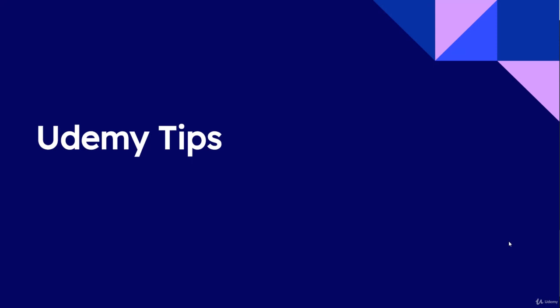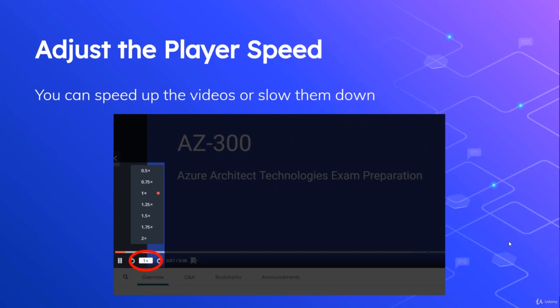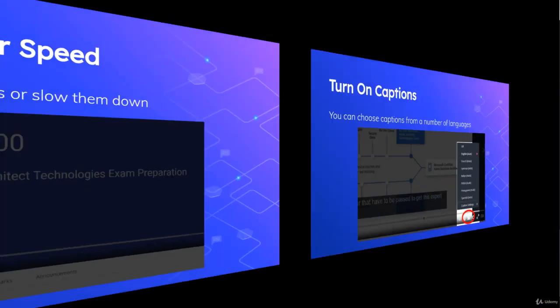Before we get into the content, I just want to take a minute to talk about the Udemy video player. In the bottom left of the screen is the speed control, and if you think I'm talking too fast or too slow, you can change the speed down in the left.